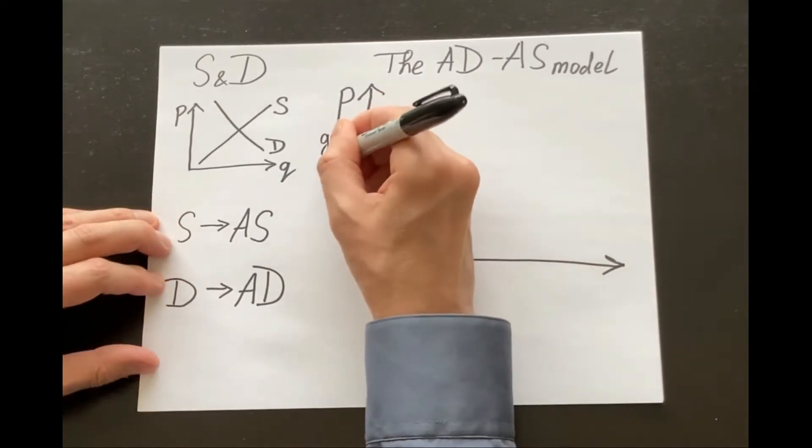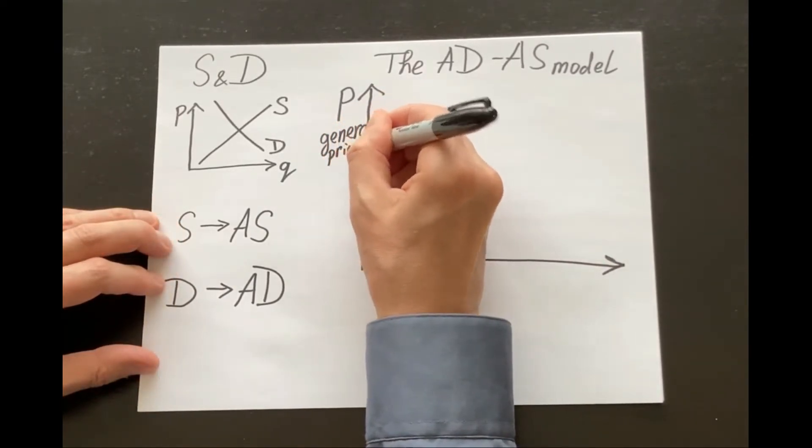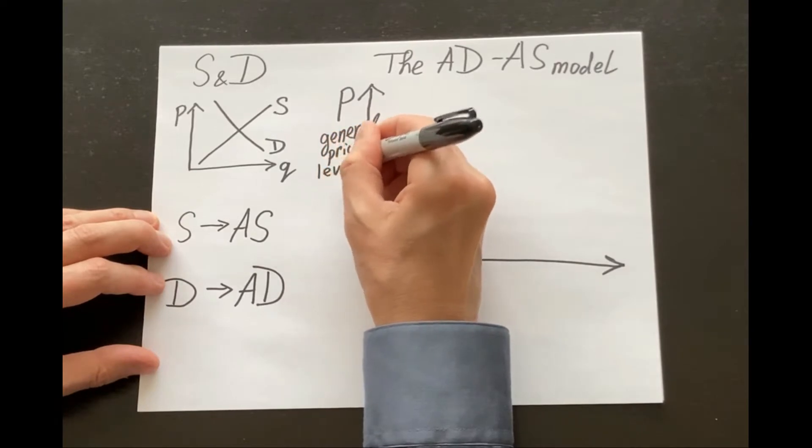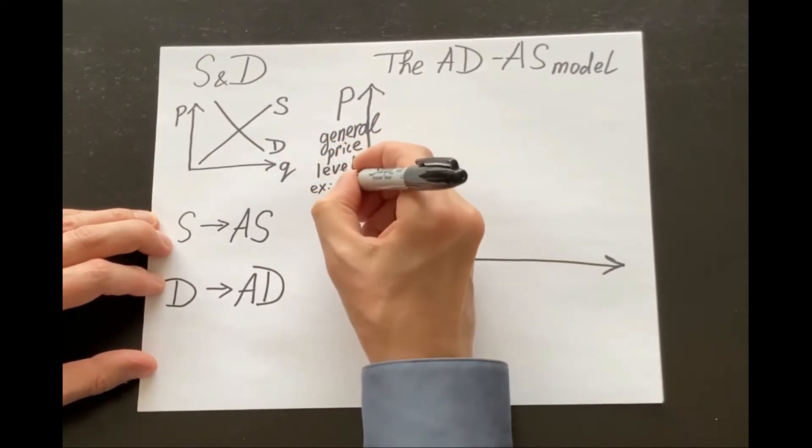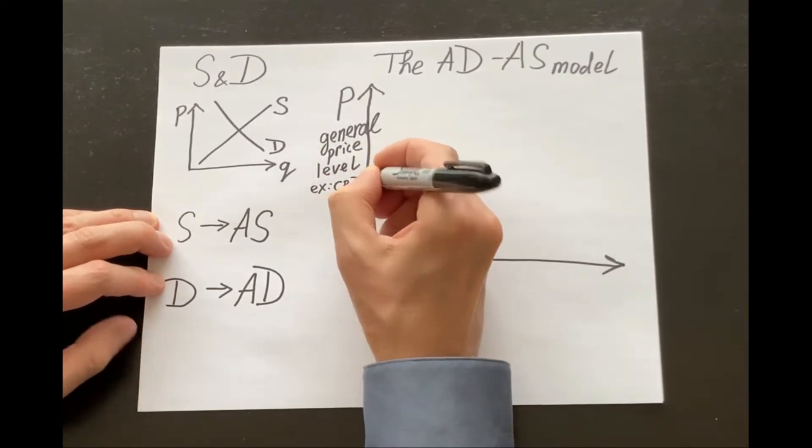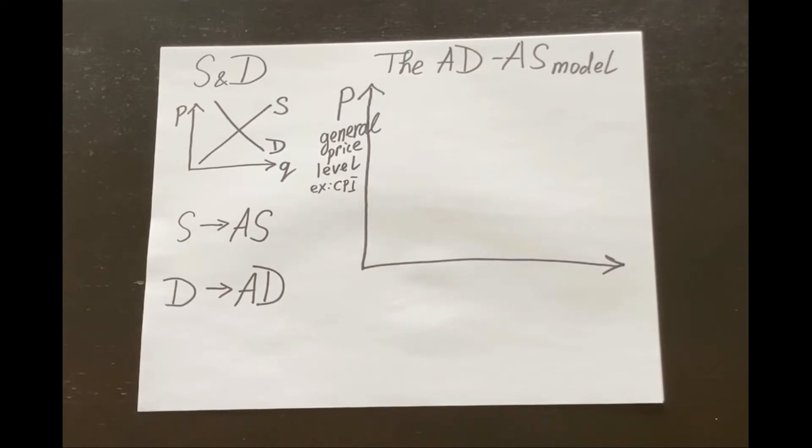On a vertical axis we put the price, the general price level. It's the general price, the average price for all goods and services produced in this country. For example, the CPI, the consumer price index, or the GDP deflator.